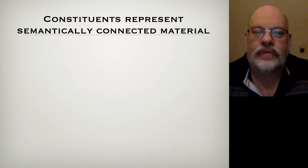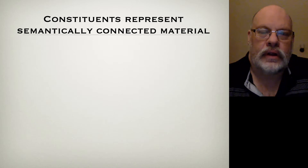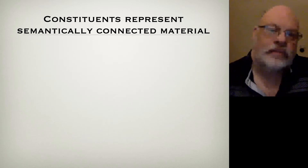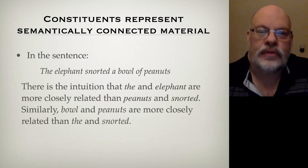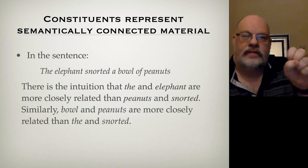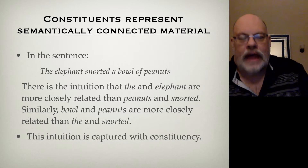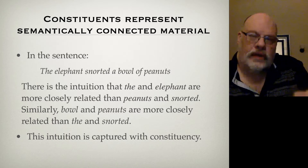So what do constituents really represent? One thing that's important to understand is that they typically represent semantically connected material. Often an item plus all of its modifiers form a constituent. For example, take the sentence: the elephant snorted a bowl of peanuts. There's a key intuition that the is associated with elephant, not with peanuts. And peanuts and snorted are more closely related than the and snorted. So there are groupings of things that are semantically connected, and we're going to capture this with our representations of constituency.